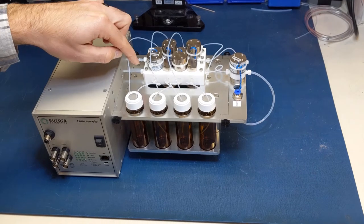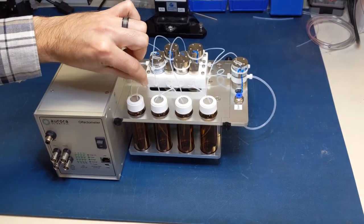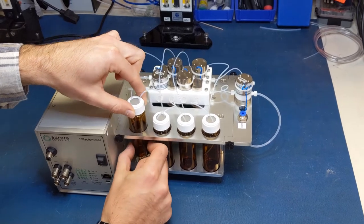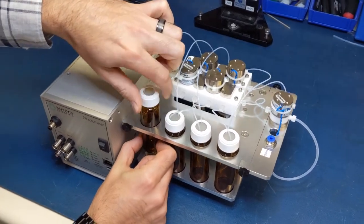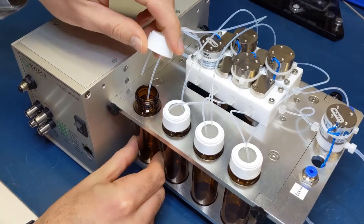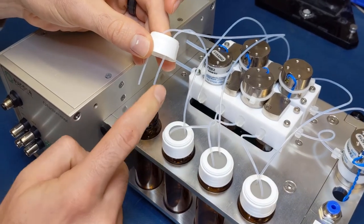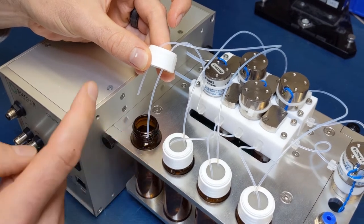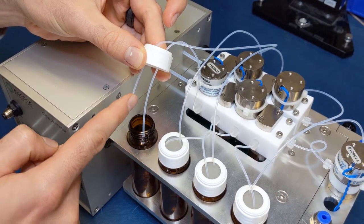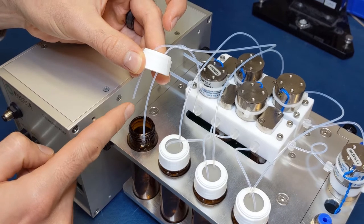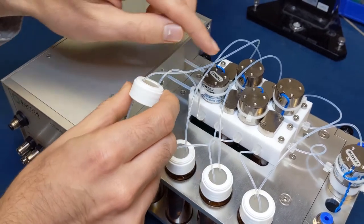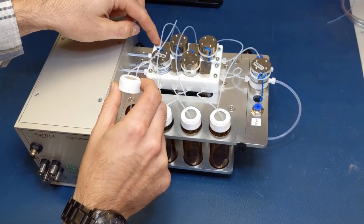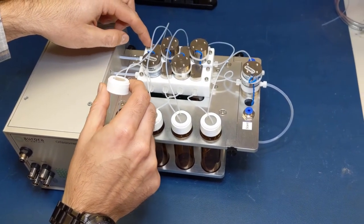When the vial valve opens, air flows into the vial containing the odorant. The air flows down the longer tube, which generates headspace within the vial. The shorter tube then picks up the odorant created in this headspace. Once the odorant is picked up, it travels into the dilution flow, and then finally down to the mixing valve.